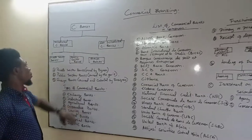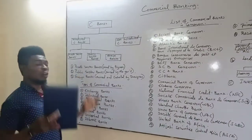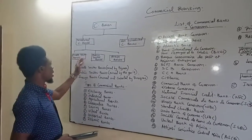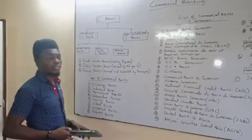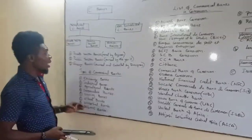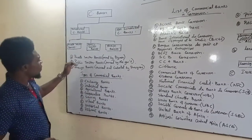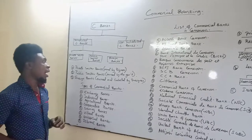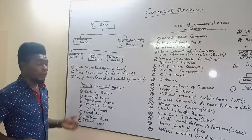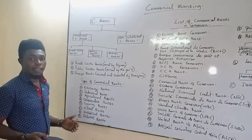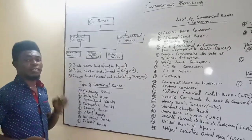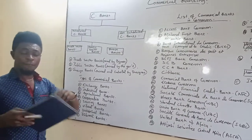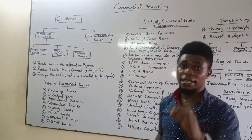Scheduled commercial banks are commercial banks that are normally scheduled within the framework of an economy, and there are three types. The first is private sector banks — banks that are owned by businessmen within the framework of a nation. These private sector banks are profit-oriented. Any bank owned by a business person within the framework of an economy is going towards profit maximization and wealth maximization.